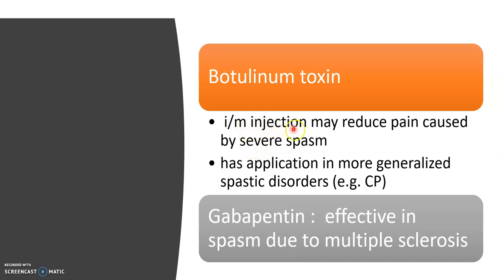Intramuscular injection of botulinum toxin may reduce pain caused by severe spasm and is used in more generalized spastic disorders such as cerebral palsy. Another drug is gabapentin, which is effective in spasm due to multiple sclerosis — a devastating neurological condition.